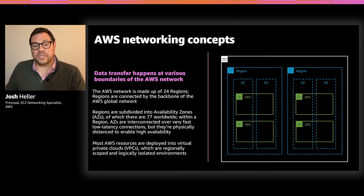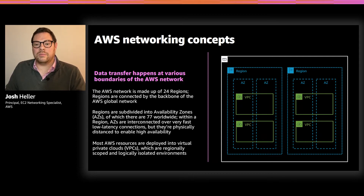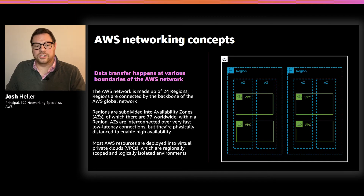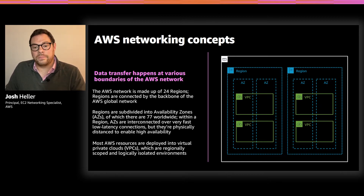The last building block we'll discuss is Amazon Virtual Private Cloud, or VPC. VPCs are the environments where many AWS resources are deployed. They're regionally scoped — deployed within a given region and crossing between multiple availability zones within that region. VPCs are logically isolated parts of the AWS cloud where you can create a virtual network configuration that you define, including IP addressing, subnet strategy, route tables, and more.